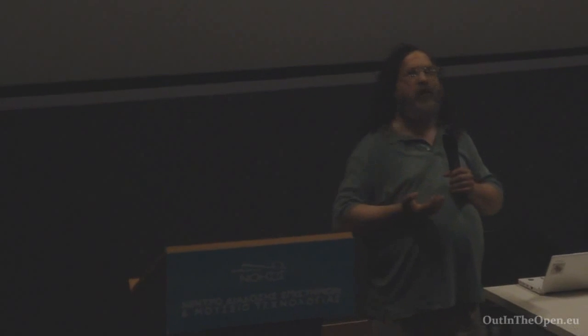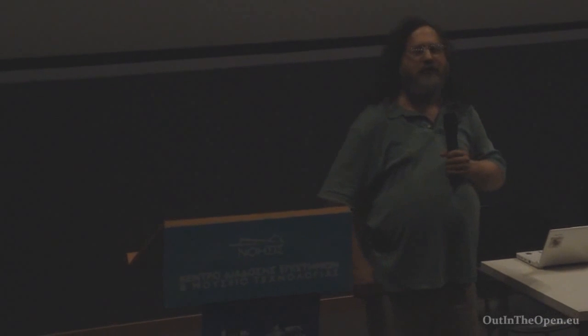But why are these four freedoms essential? Why define free software this way? Each freedom has a reason. The freedom to help others — the freedom to redistribute exact copies when you wish — is essential on basic moral grounds, so you can live an upright ethical life as a good member of your community. If you use a program that denies freedom two, you are in danger of falling into a moral dilemma at any moment. Whenever your friend says, 'that program seems useful, can I have a copy?', in that moment you will face a choice between two evils.